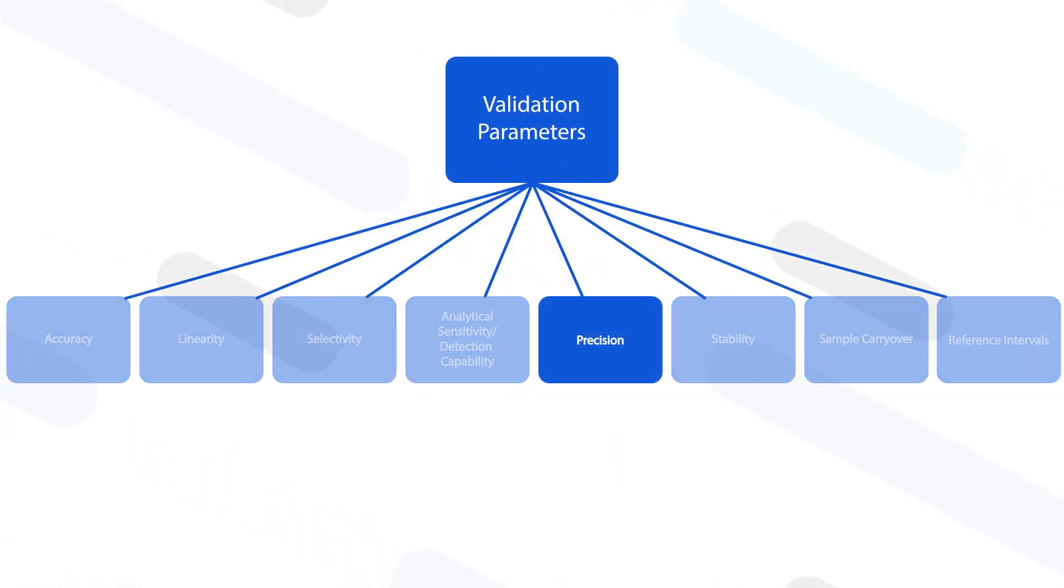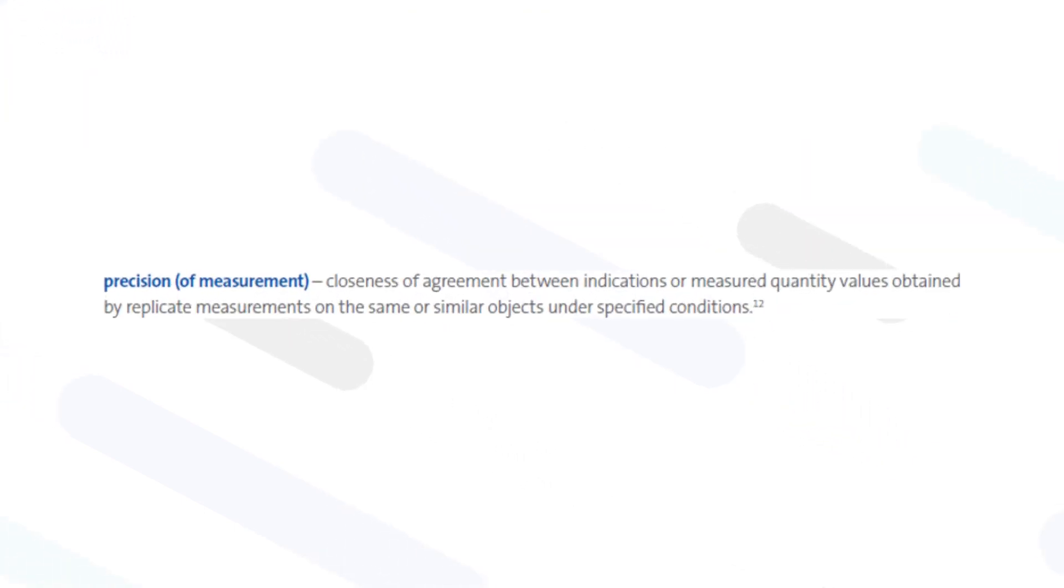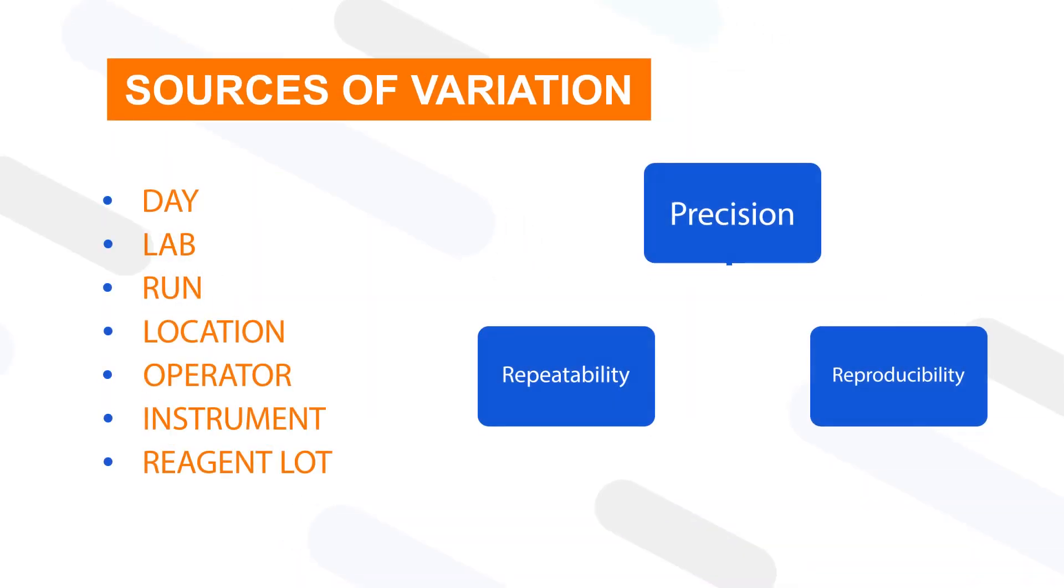Precision is one of the standard validation parameters for flow cytometric methods. Precision is defined as the closeness of agreement between indications or measured quantity values using replicate measurements on the same or similar objects under specified conditions.